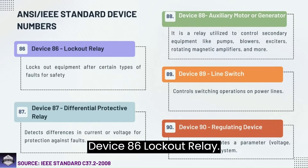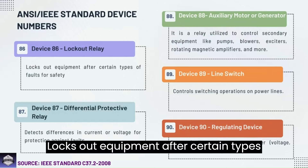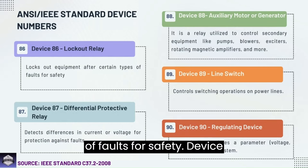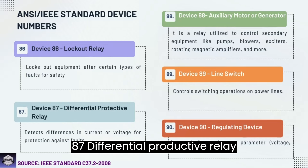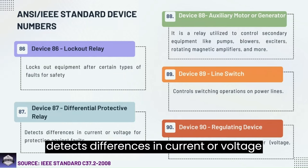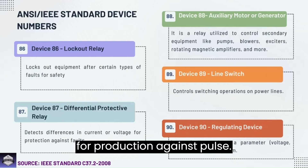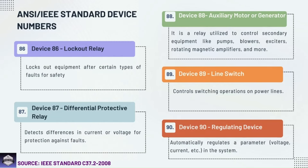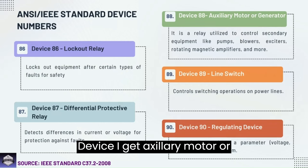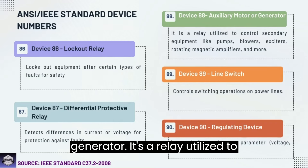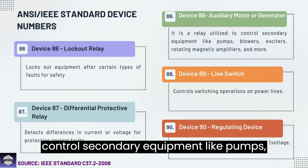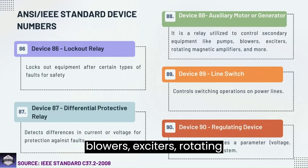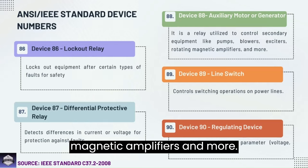Device 86: Lockout relay — locks out equipment after certain types of faults for safety. Device 87: Differential protective relay — detects differences in current or voltage for protection against faults. Device 88: Auxiliary motor or generator — a relay utilized to control secondary equipment like pumps, blowers, exciters, rotating magnetic amplifiers, and more.